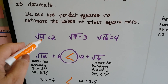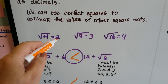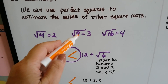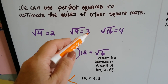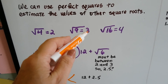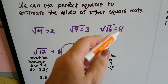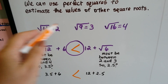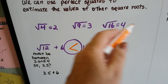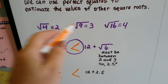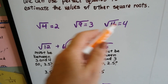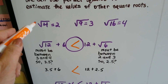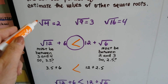We know the square root of 4 is 2, because 2 times 2 is 4. We know the square root of 9 is 3, because 3 times 3 is 9. And the square root of 16 is 4, because 4 times 4 is 16. These are perfect squares. We can use these to help us put irrational — squares that are not perfect — in order.